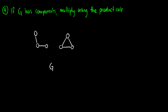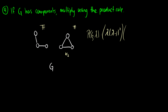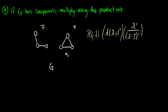If a graph has multiple components, we use the product rule: multiply the chromatic polynomial of each component together. For example, if one component is a path of length three and the other is K3, then P(G, lambda) equals lambda times (lambda minus one) squared, multiplied by lambda factorial over (lambda minus three) factorial. We could expand and simplify, but it's not necessary.